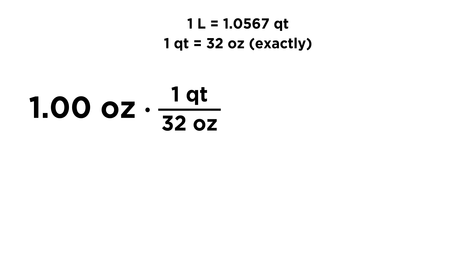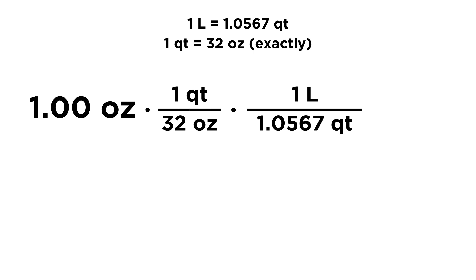We are always multiplying our value by things that are equal to 1, achieved by using fractions where the top and the bottom are equivalent — just expressed differently — so it won't change our value, only our units. It's very important that we put ounces on the bottom so that ounces cancel. Then we use the other conversion factor: 1 liter over 1.0567 quarts, so that quarts also cancel. Ounces cancel top and bottom, quarts cancel top and bottom, and the only unit remaining is liters.